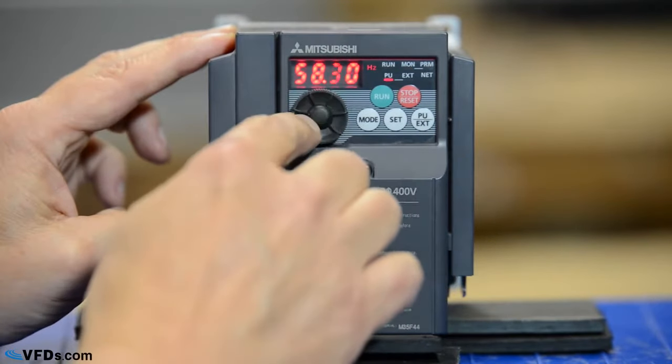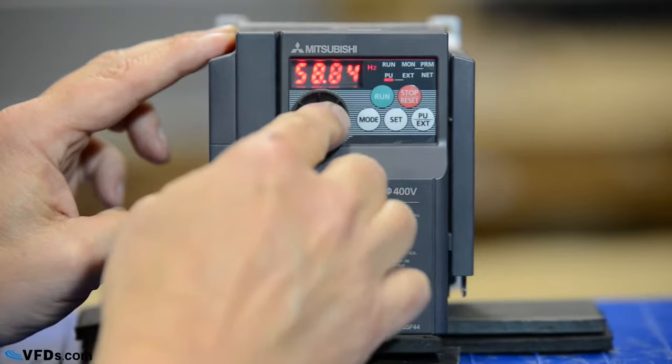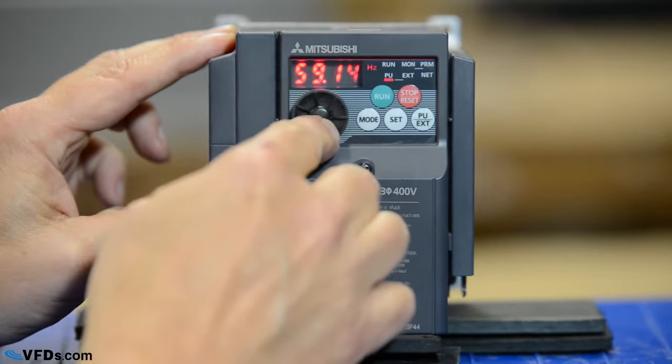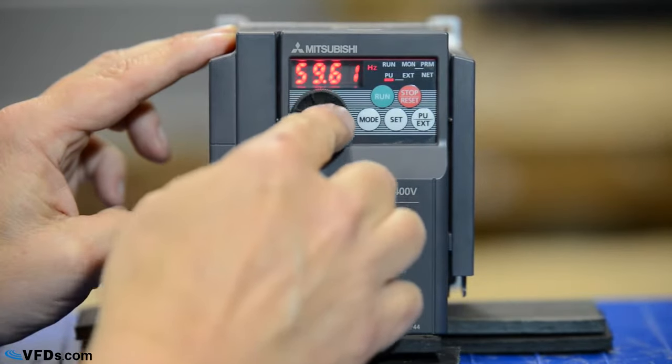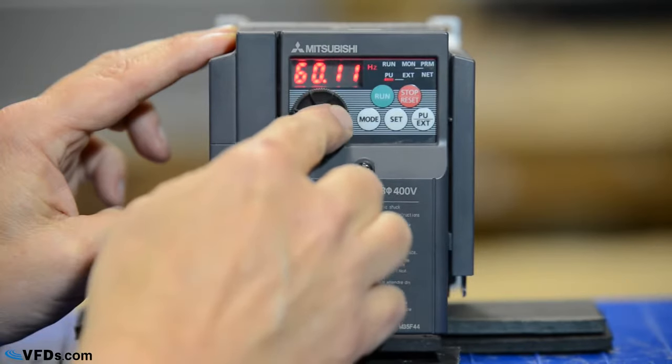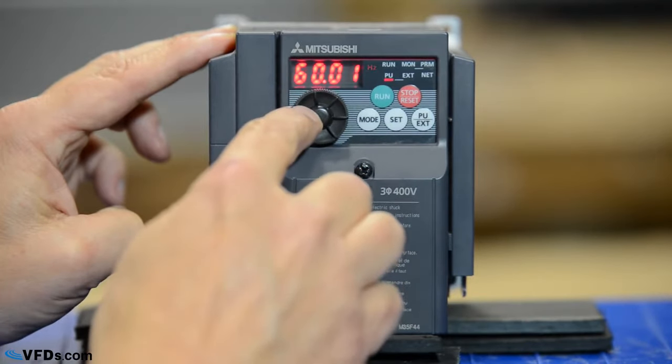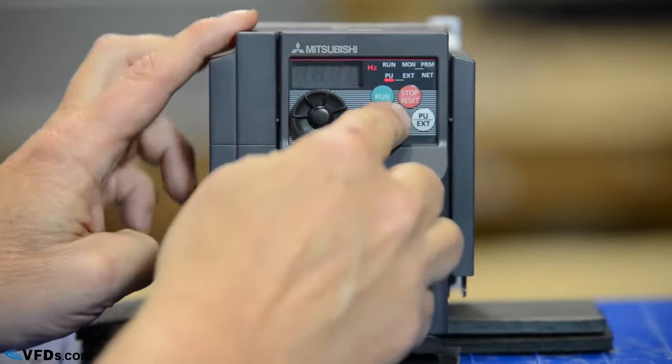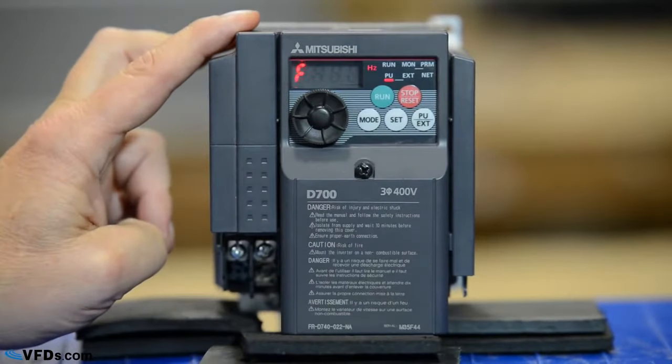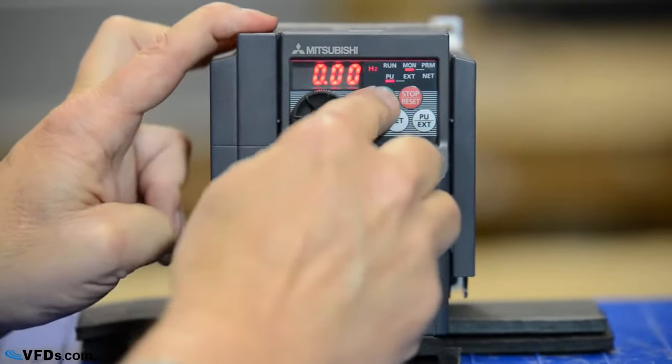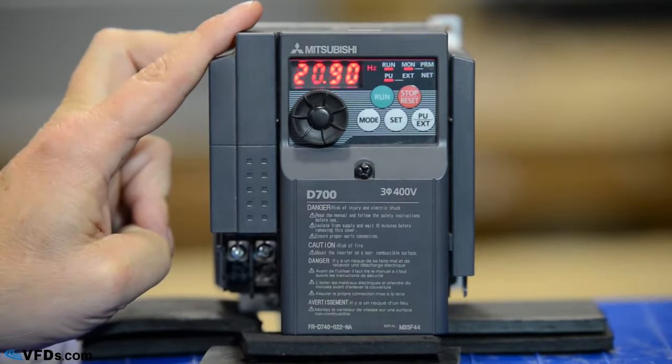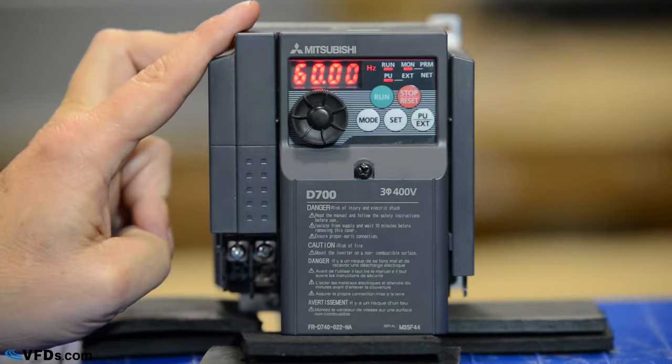Then I'll take this and set a frequency. I'm going to set 60 hertz. I'll move this up to 60 hertz, and when I get to 60 hertz, I'll simply press set and it will seal that in as my running speed. I now simply press run and the drive will ramp up in the programmed acceleration time to 60 hertz.